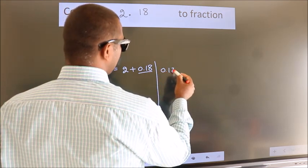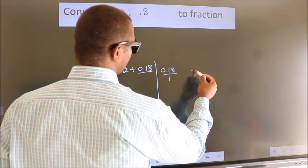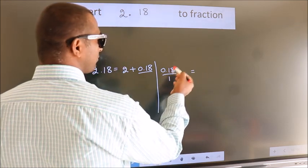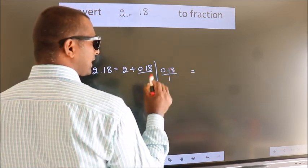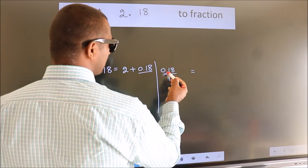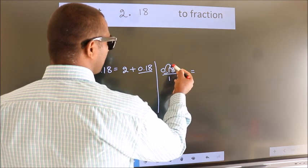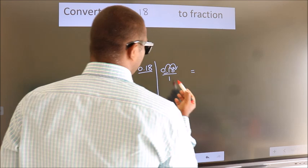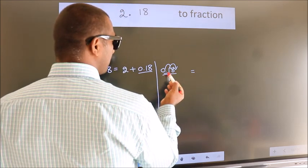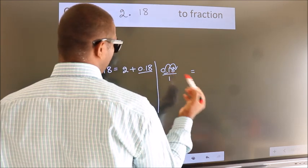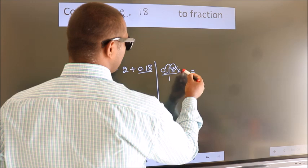So 0.18. To convert this to fraction, we have to move this decimal after two numbers. For that multiply with 100.